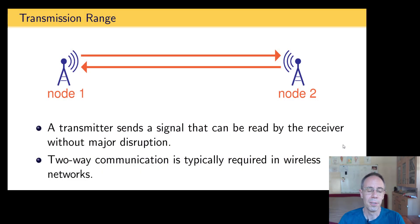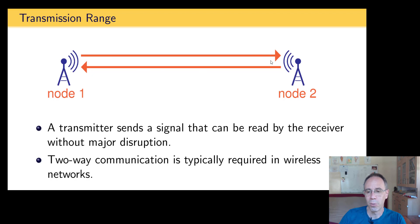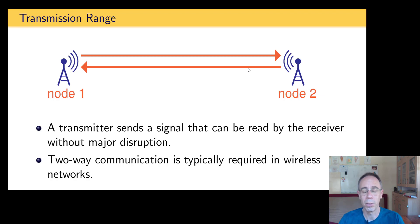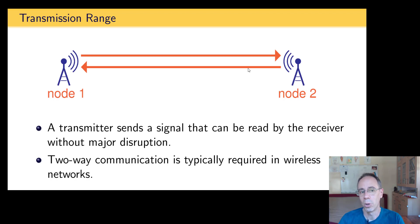The first thing is: what does transmission range mean? We have two nodes — a transmitter sends signals that can be read by the receiver without major disruption. That we would call transmission rate. But normally in wireless networks we want two-way communication, so the communication can go in both directions without major disruption — that we call transmission range, at least a direct transmission range. In wireless networks there are different kinds of topologies.